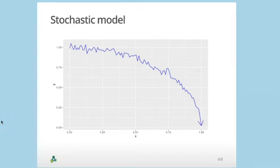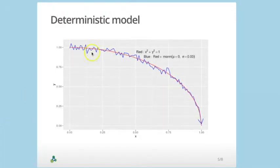The way I've generated the plot is by starting with the deterministic function x squared plus y squared equals 1. This is the red line. I then added some noise.